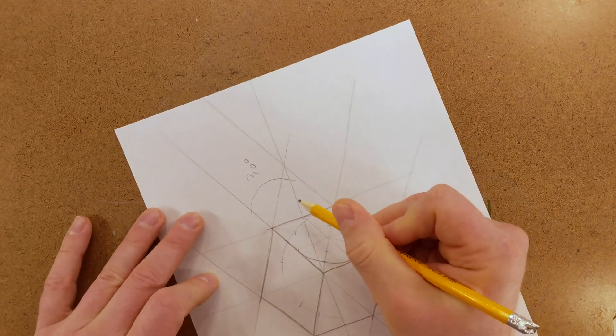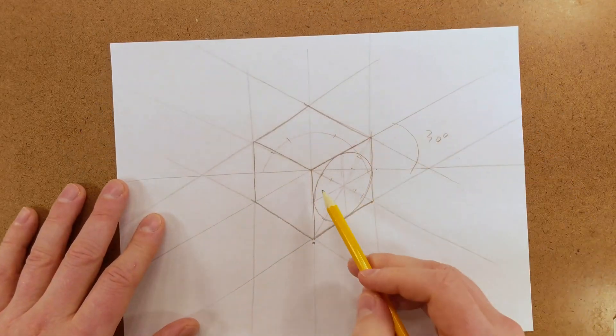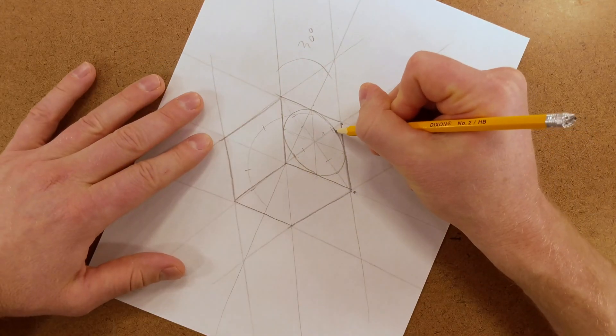It's okay if it doesn't go straight through your guess point. It's just an estimate to give you a guide. Once we've drawn this, what we want to do is start at these guess points and redraw it darker to smooth out the line.